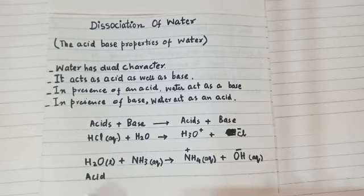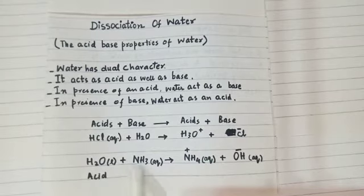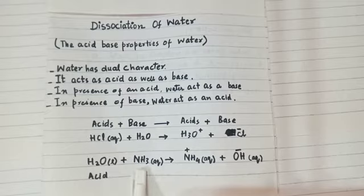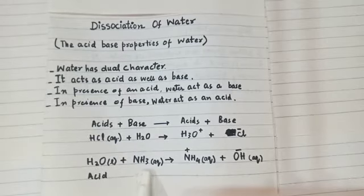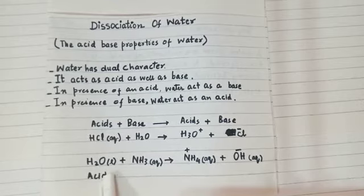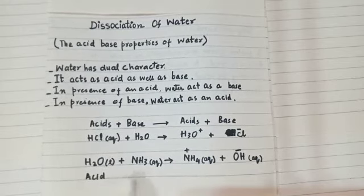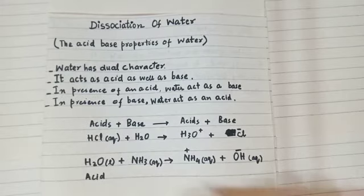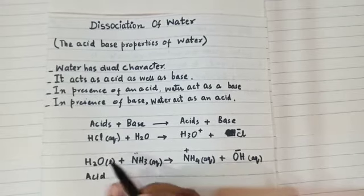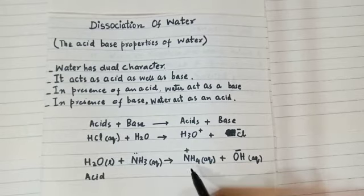Second example: here is water which will react with ammonia, which is a base. So here is the water acting as acid. Ammonia, which is nitrogen, will extract the proton, forming ammonium ion.